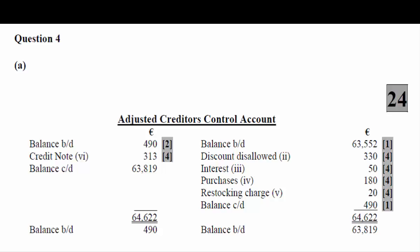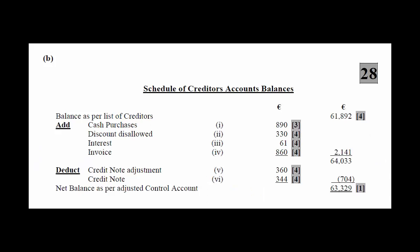We carry down the 490 euro to the credit side — there is no reference to this figure in the question — and balance the account to give a figure of 63,819 to be carried down on the credit side. It's important to take the credit balance of 63,819 and deduct the 490 euro to give a net balance of 63,329 in the creditors control account, calculated as 63,819 minus 490.